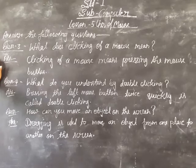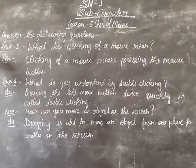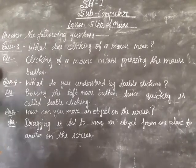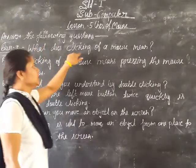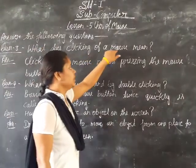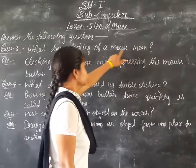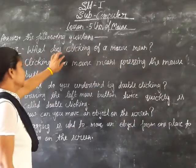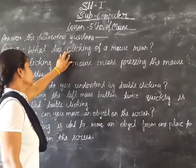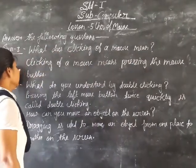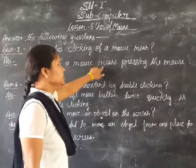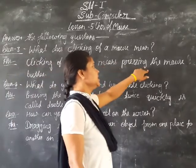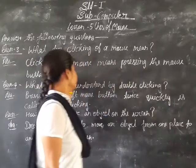Answer the following question. Question number third: what does clicking of the mouse mean? Answer: clicking of the mouse means pressing the mouse button.